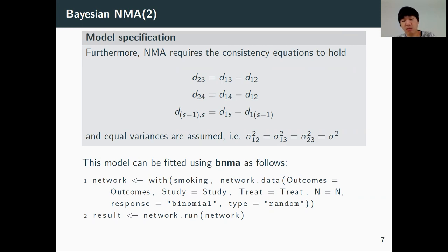This model can be fitted using the BNMA package as follows. We first set up the model using a function called network.data, and we specify the input, response, and type. Then we can run the model using a function network.line.